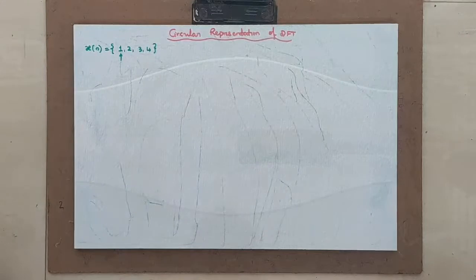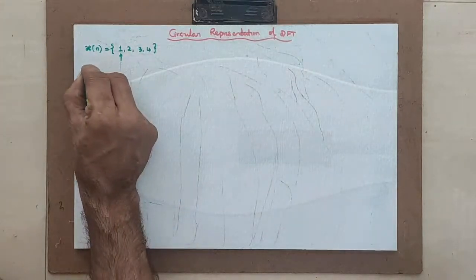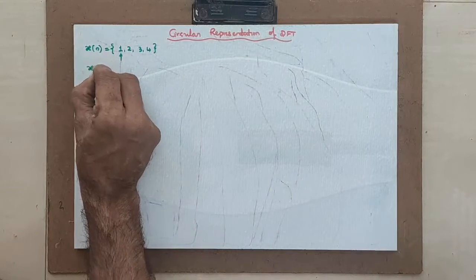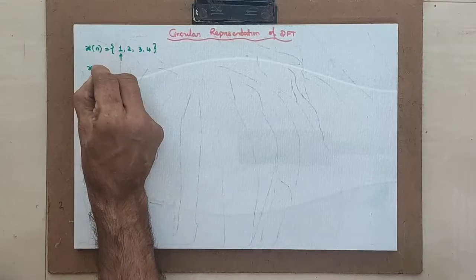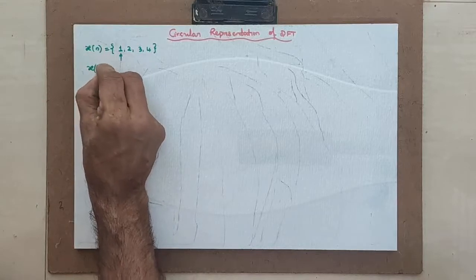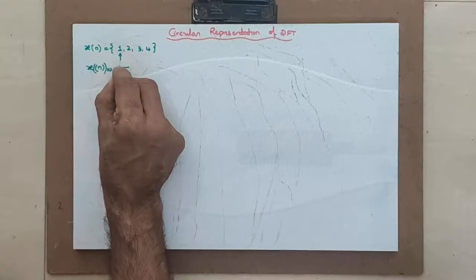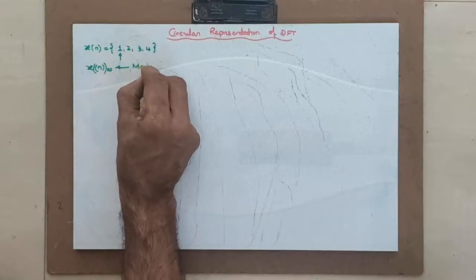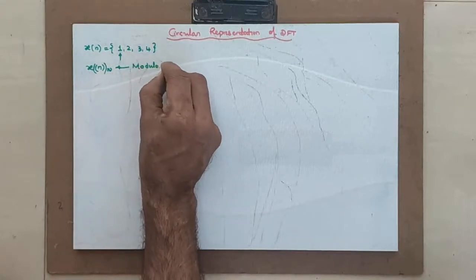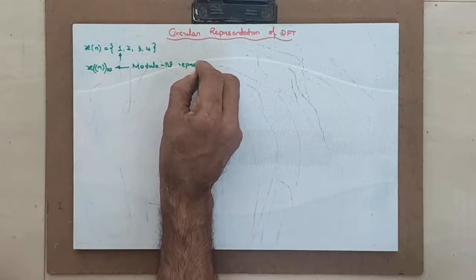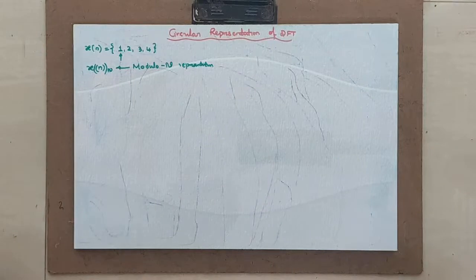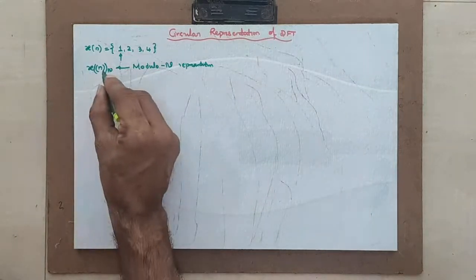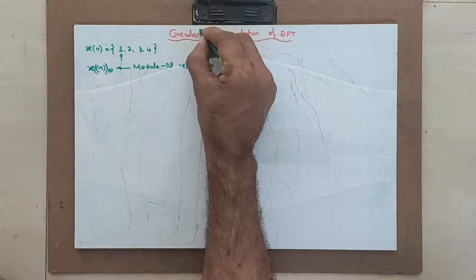We try to represent it in modulo n representation. We represent it like this, x of n around that n. This is called as modulo n representation. Because this signal is repeating itself when you are bringing it into time domain, we try to represent this as modulo n or circular representation.